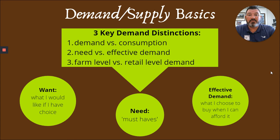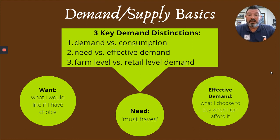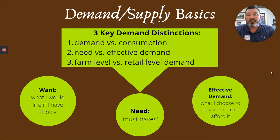Three key demand distinctions: demand versus consumption — they're two different things. Need versus effective demand. And farm level versus retail level demand — there's a certain amount of grain available on the farm, and a different amount available at the retail counter. So we break things into want, need, and effective demand. Want — what would I have if I had a choice? Need — the must-haves. And effective demand — what I choose to buy when I can afford it. That really dictates what the consumer tends to do.